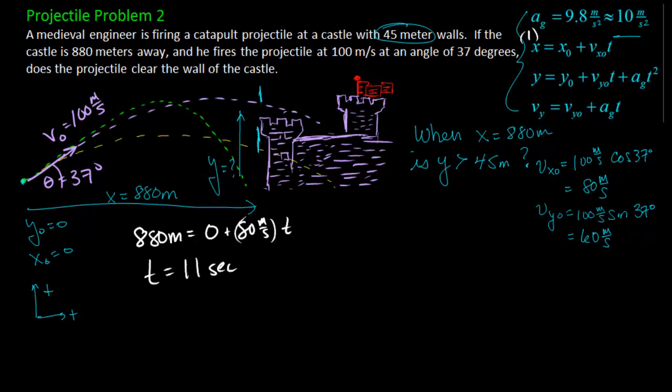Now I want to figure out how high the projectile is when it's there. So I'll use my y equation second. And I can say y is equal to my initial y position is zero plus my initial y velocity is 60 meters per second times 11 seconds plus 1 half times negative 10 meters per second squared times 11 seconds squared. Do all the algebra and you get that the y position is going to be 55 meters.